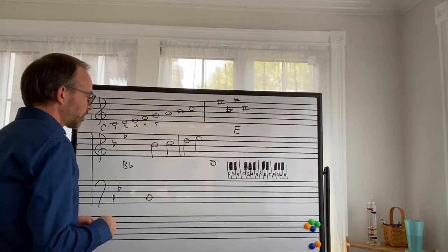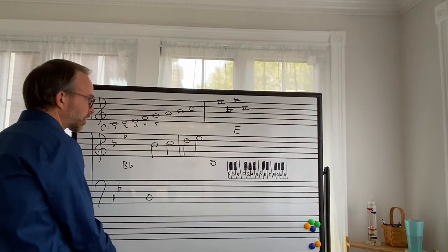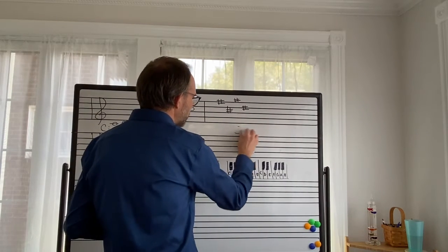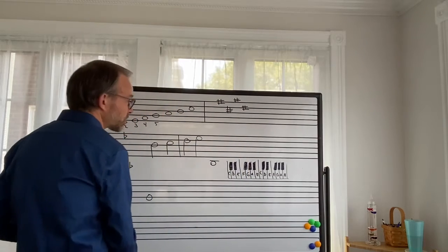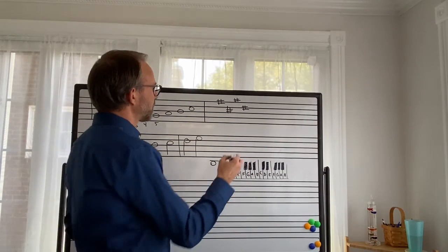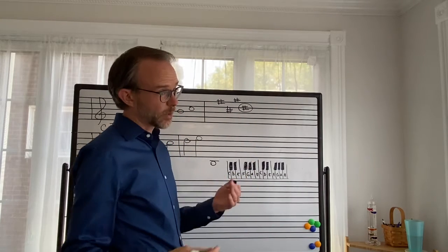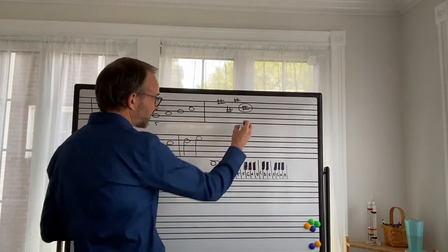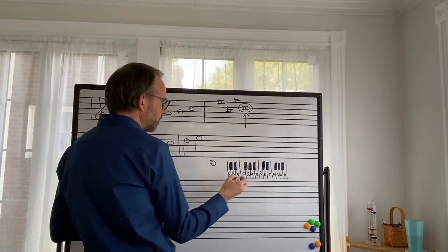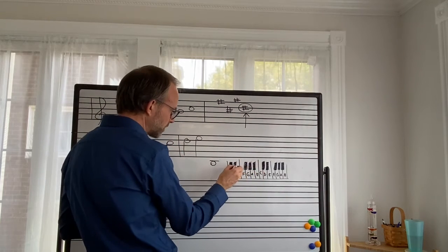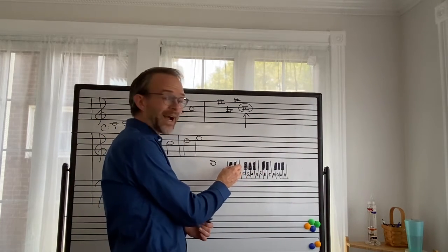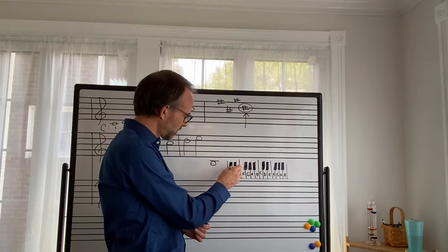So there are some shortcuts with sharps and flats. If you see sharps in the key signature, you take the last sharp, find it, there it is, D sharp. Go up a minor second, half step.